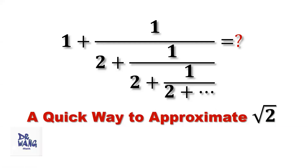Hello, everyone. I'm Dr. Wen. Here is the question. We want to find the value of this continued fraction: 1 plus 1 over 2 plus 1 over 2 plus 1 over 2 plus 1 over 2, continuing forever following this pattern. Then we will use this result to introduce a quick way to approximate the square root of 2 without using a calculator.